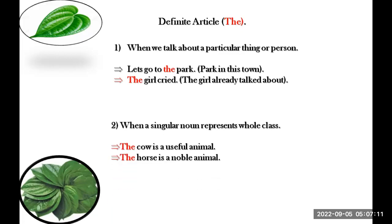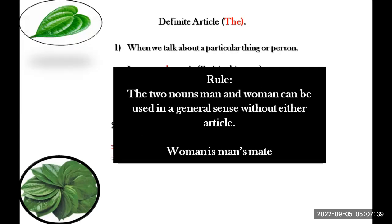I am referring to a particular girl. The other usage is when there is a singular noun representing the whole class. For example: 'The cow is a useful animal.' The cow here represents the entire class of cows. Similarly, 'The horse is a noble animal.' Also, 'Women are men's mate' — the sentence is complete.